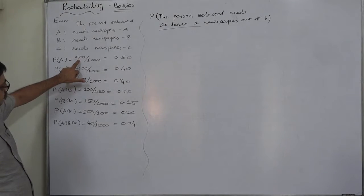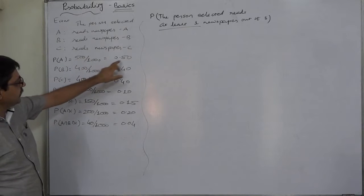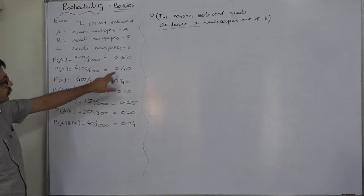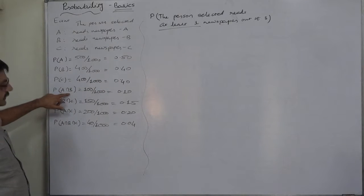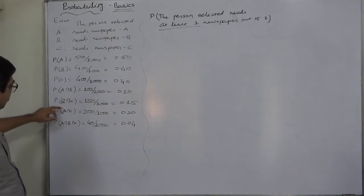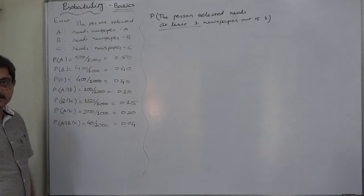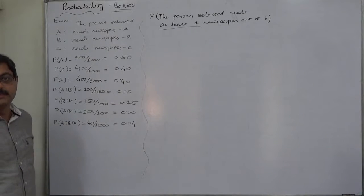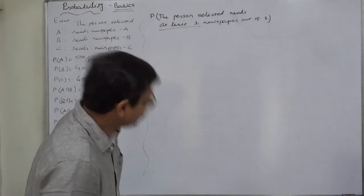500 read A, so the probability of reading newspaper A is 500 by 1000, which is 0.5. Similarly, P(B) and P(C) come to 0.4 and 0.4. P(A∩B) means reading newspapers A and B, P(B∩C) means reading B and C, P(A∩C) means reading A and C, and P(A∩B∩C) means reading all three newspapers A, B and C.